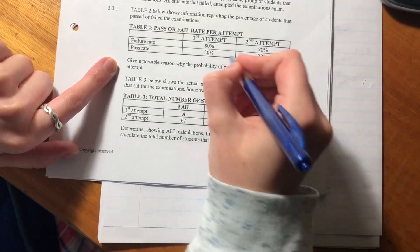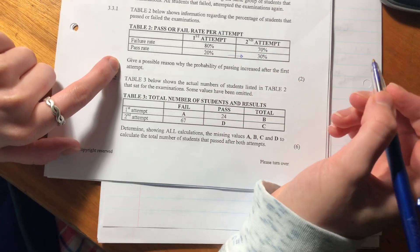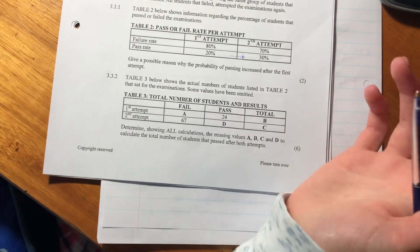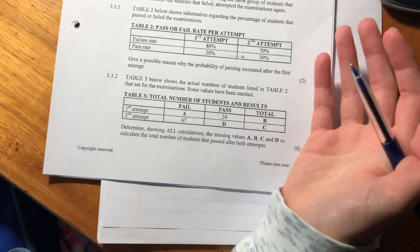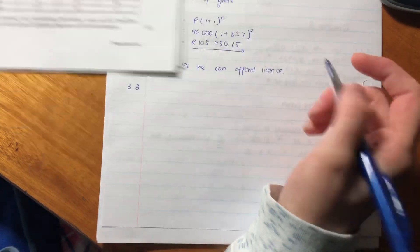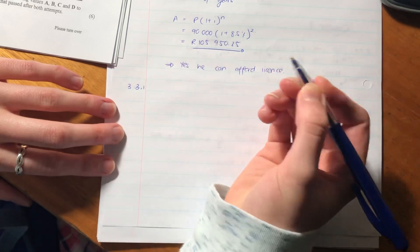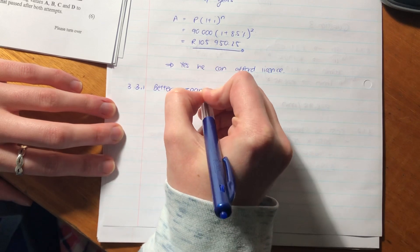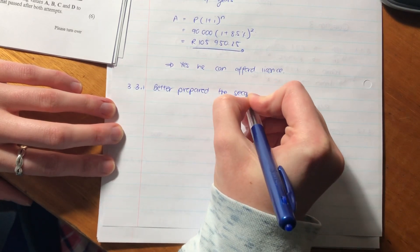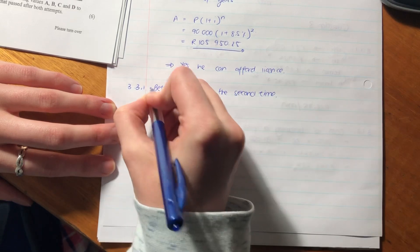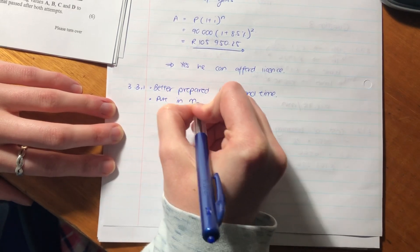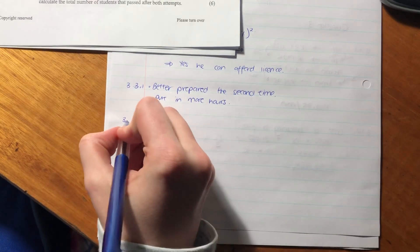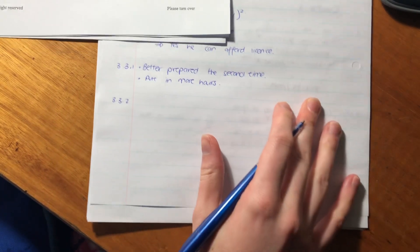Give a possible reason why the probability of passing increased after the first attempt. You see it went from 20% to 30%. There could be numerous reasons - they were better prepared, they were more serious about it the second time, put in more hours. There's loads of things you could say. It's only one possible reason, so you could say either of those.